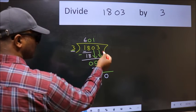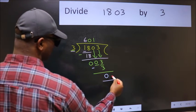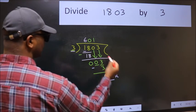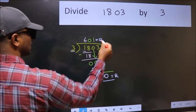No more numbers to bring down. So we stop here. This is our remainder and this is our quotient.